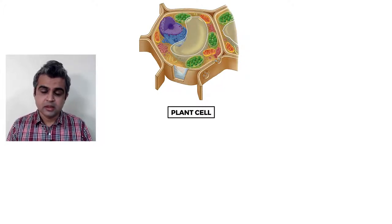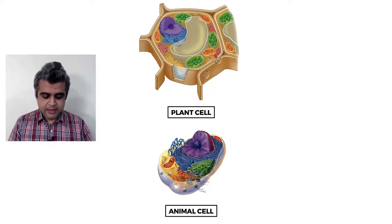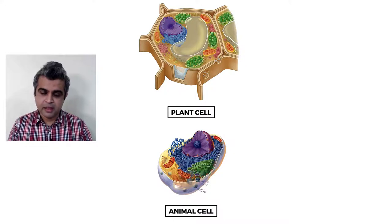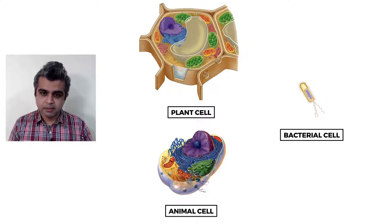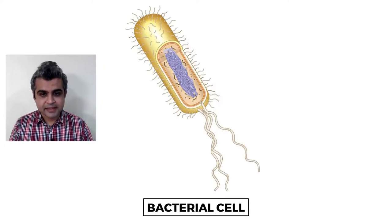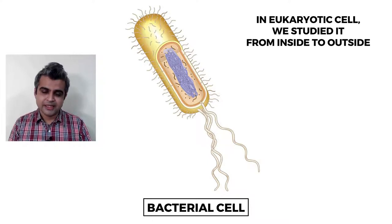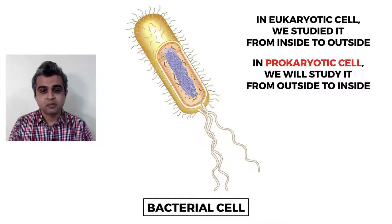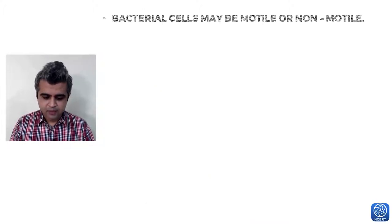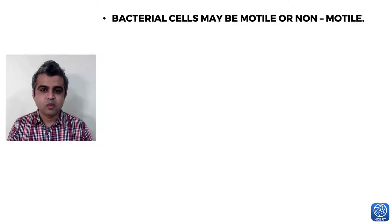A plant cell and animal cell are generally larger than a bacterial cell, which is much smaller but can multiply much faster. Unlike eukaryotic cells, which were studied from inside to outside, prokaryotic cells are studied from outside to inside. Bacterial cells may be either motile or non-motile.